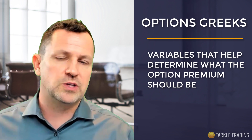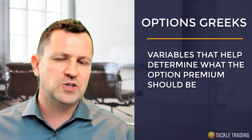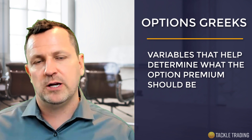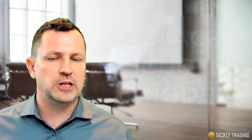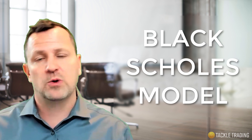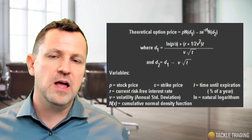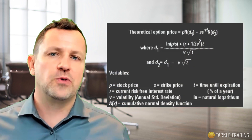The Options Greeks are the variables that help determine what the Option Premium should be, using a fancy math formula known as the Black-Scholes Options pricing model. It's a bit of calculus. This algorithm accounts for those five key variables we really need to understand to make money and control risk when we trade options.